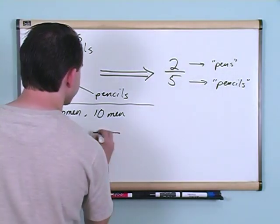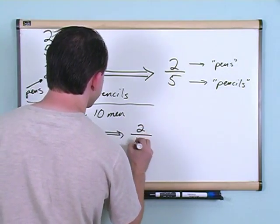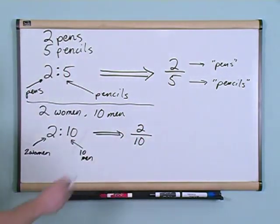Now you can also write this, as we said before, as a fraction. You can put the two and the ten like this. So two women for every...